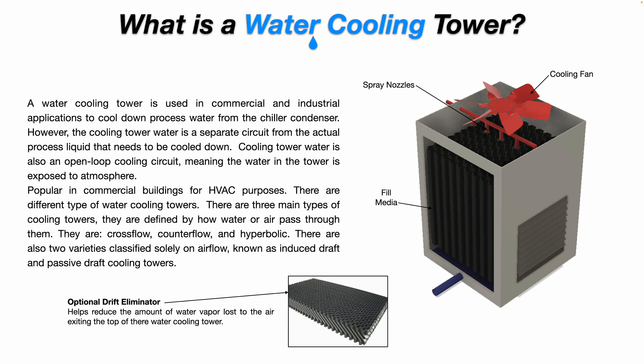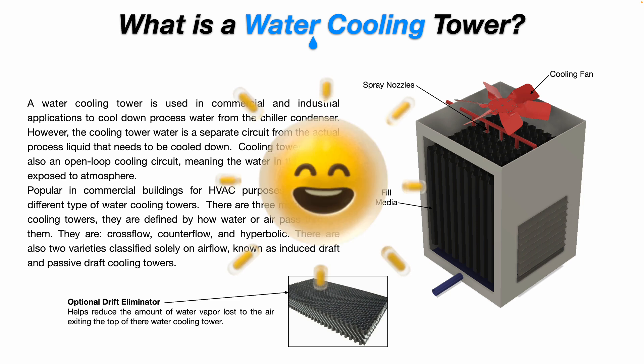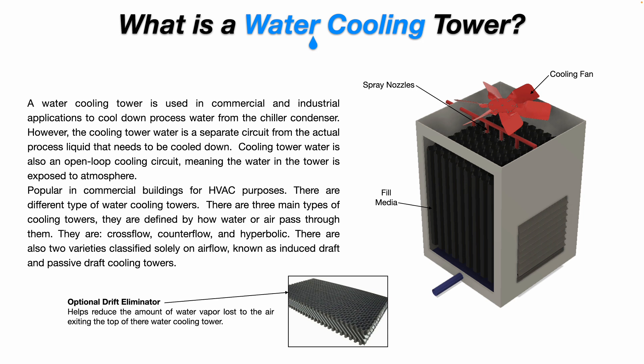A water cooling tower is used in commercial and industrial applications to cool down processed water from the chiller condenser. However, the cooling tower water is a separate circuit from the actual processed liquid that needs to be cooled down. The processed liquid or water inside the building never touches or mixes with the cooling tower water. Cooling tower water is also an open loop cooling circuit, meaning the water in the tower is exposed to atmosphere or daylight. They're popular in commercial buildings for HVAC purposes.